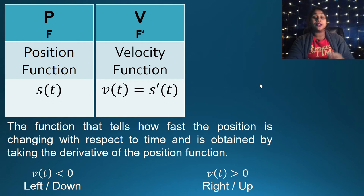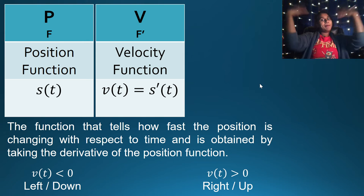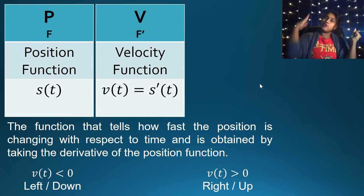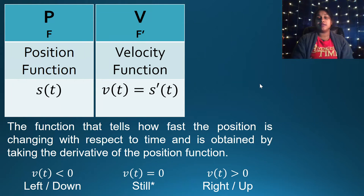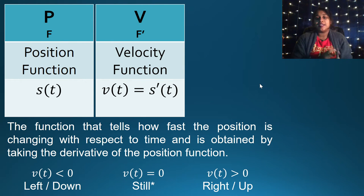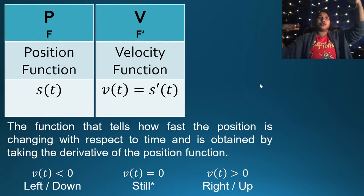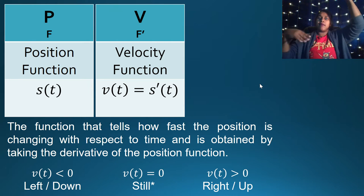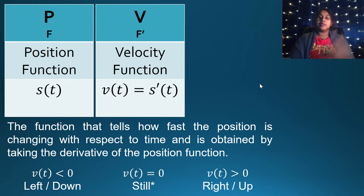A particle is moving to the right or up if velocity is above the X axis — if the original position function is increasing. If a particle is standing still, velocity equals zero, and those are typically our extrema points — at least a local max or a local min.